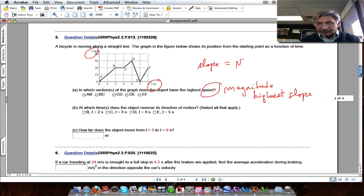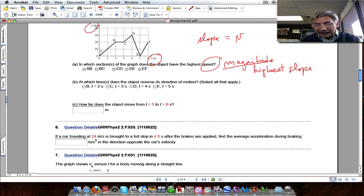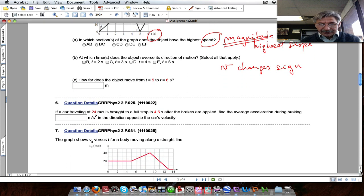But you only worry about the magnitude of the value. And you reverse motion when the velocity changes sign. That means when the slopes change sign. So you should be able to inspect that.